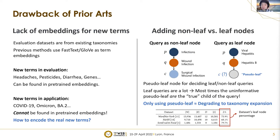However, there are some drawbacks of prior art. The first is lack of embeddings for new terms. In evaluation of these papers, the evaluation datasets are from existing taxonomies which are pretty old, and previous methods use fastText or GloVe embeddings as term embeddings. In evaluation, we can encounter terms like headaches, pesticides, diarrhea, and genes — all common terms found in pretrained embeddings. However, in real applications we might encounter new terms like COVID-19, Omicron, and BA.2, which are pretty new terms that cannot be found in pretrained embeddings. The question is how to encode real new terms in applications.